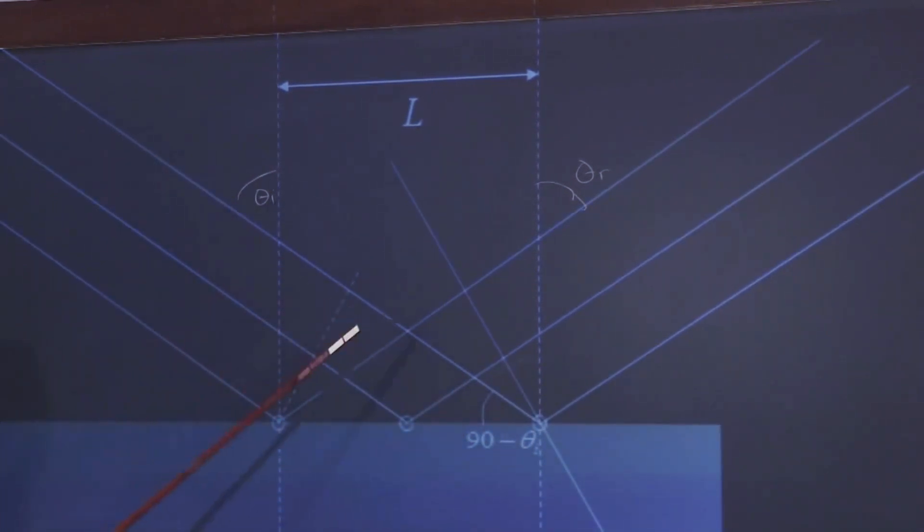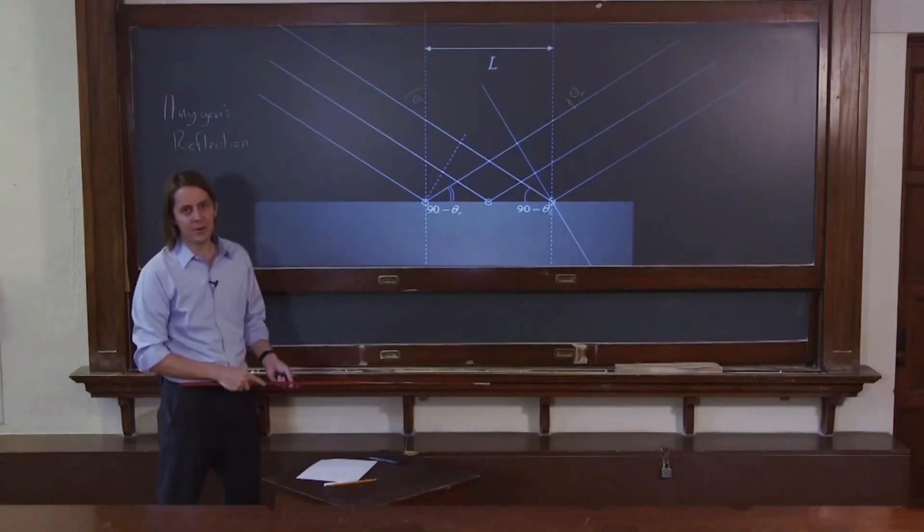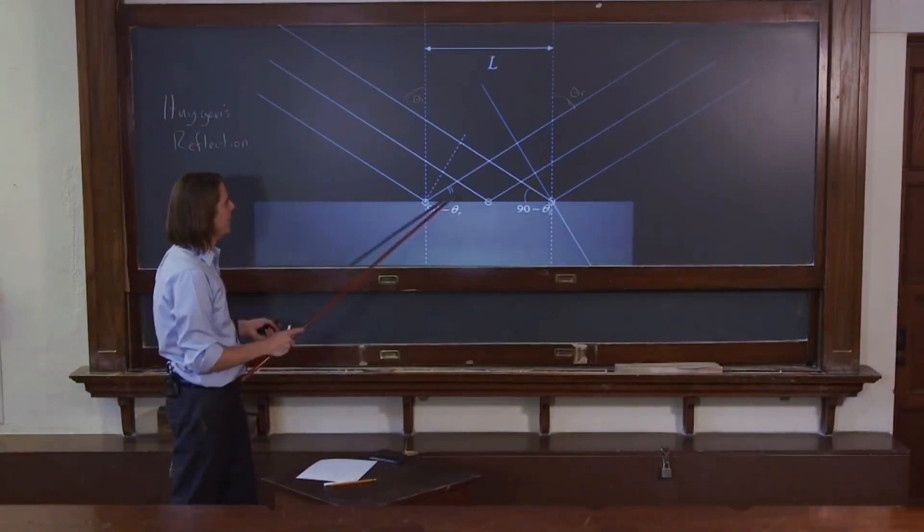So that angle, 90 minus theta i. We can also say that this is 90 minus theta r for the same reason. There's theta r. Therefore, that is theta r. Therefore, what's left to the 90 degrees is 90 minus theta r. We've identified those two.